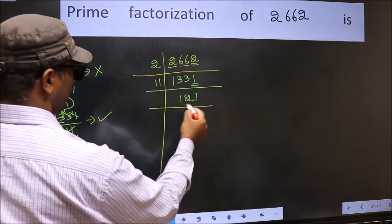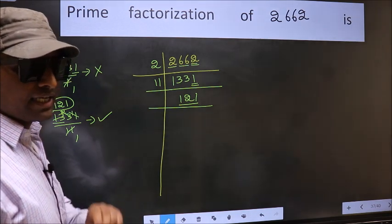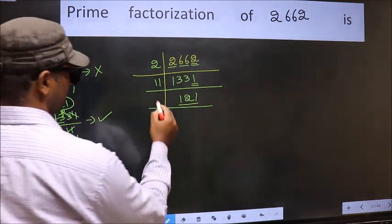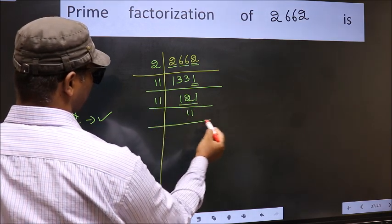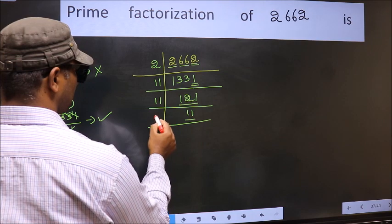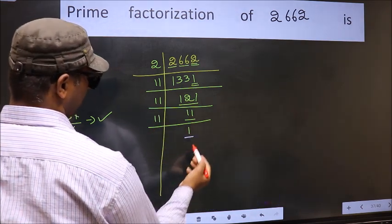Now, we have 121. Always remember, 11 into 11, 121. That is, 11 times 11 is 121. Now, we have 11, 11 is the prime number. So, 11, 1 is 11. So, we got 1 here.